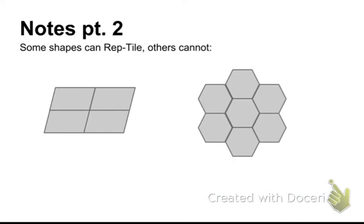So, for instance, some shapes can reptile and others cannot. If I have this trapezoid right here, by making copies of it, eventually I get a much, much bigger trapezoid.